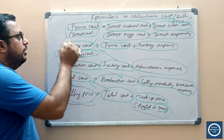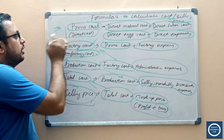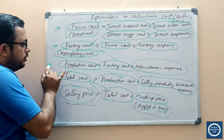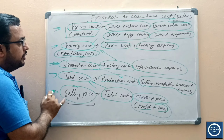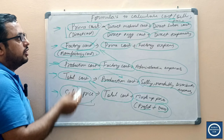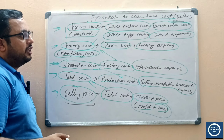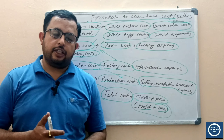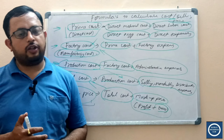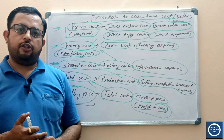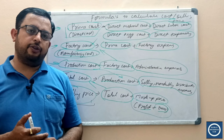So in this video we have learned how to calculate prime cost, factory cost, production cost, total cost, and selling price. These are the main formulas related to finding cost and selling price. If you have any doubts, please comment. Please like the video, subscribe to the channel, and share the video to support us.